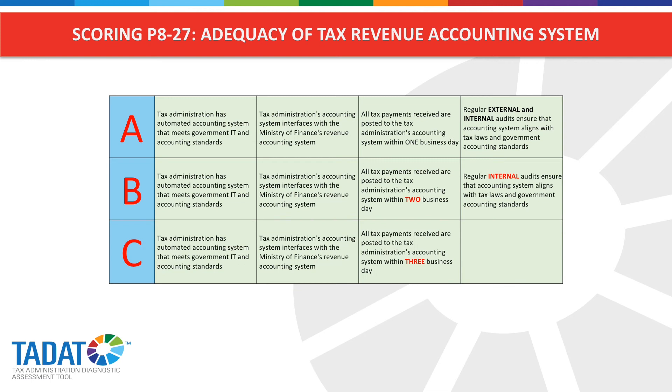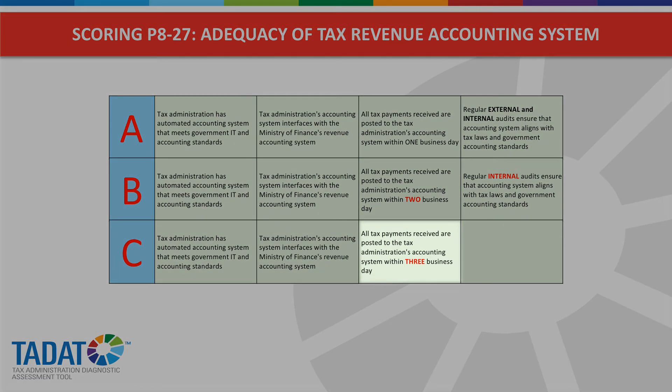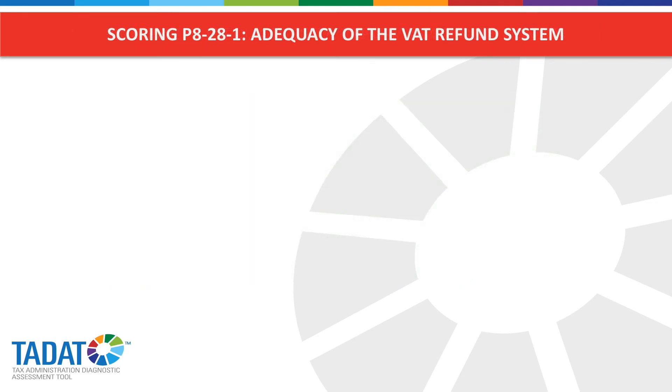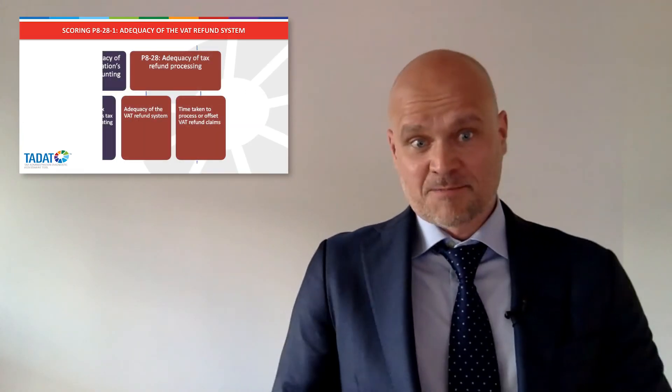For a C-level score for P827, the first two elements must still be fulfilled, and all tax payments received must be posted within three business days; the fourth element regarding audits does not need to be fulfilled. Now let's look at the last indicator, P828, about the adequacy of tax refund processing. This indicator has two dimensions: one about the adequacy of the VAT refund system and one about the time taken to pay or offset VAT refund claims. For this indicator, the M2 method is used, meaning the average of the scores for the two dimensions becomes the score for the indicator.